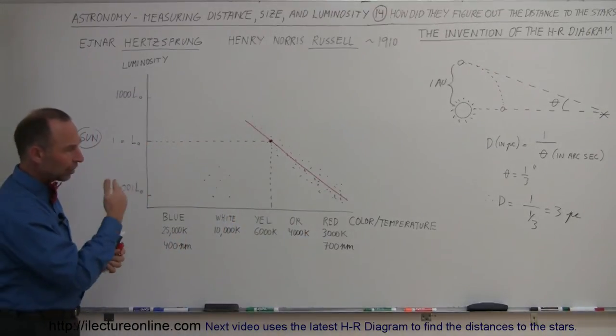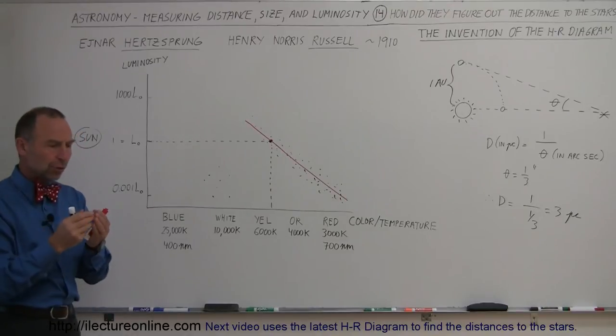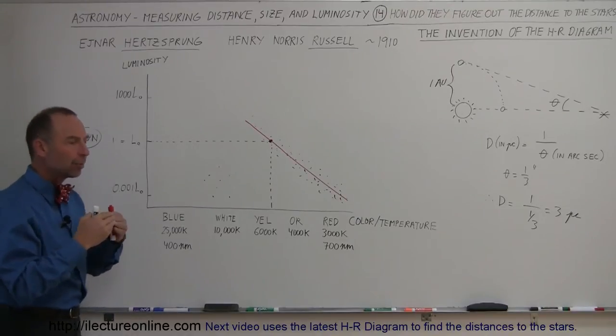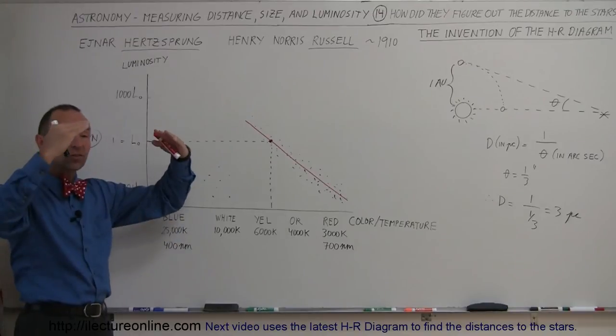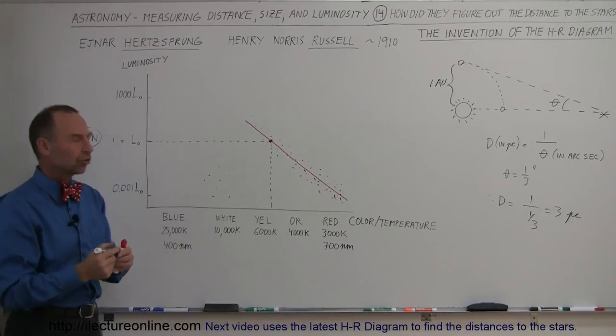Now, when they started looking at this, we already knew that the amount of luminosity of the star depends on two things: it depends on the size of the star, and it depends on the temperature of the star.